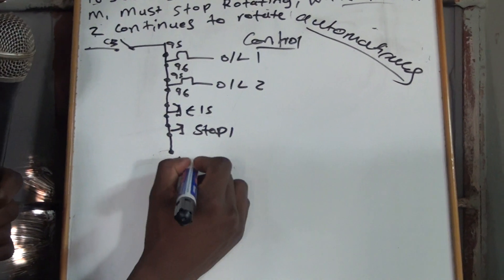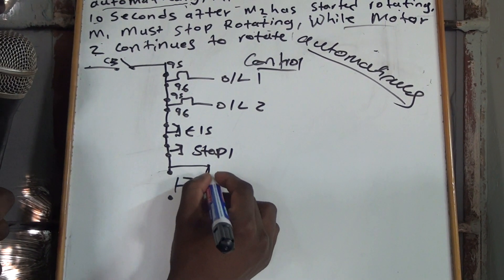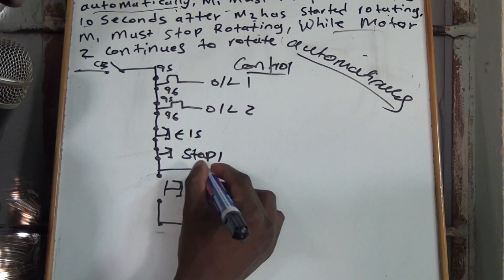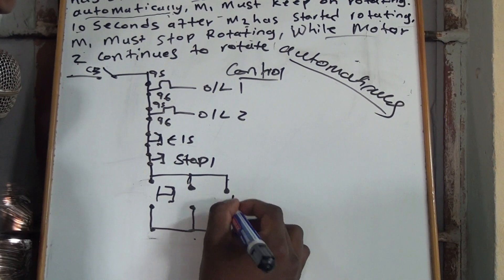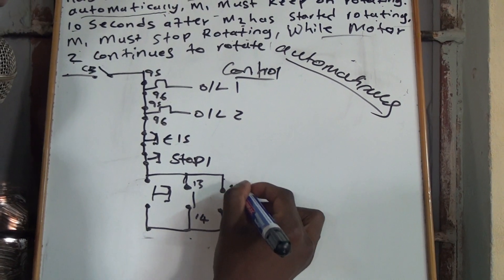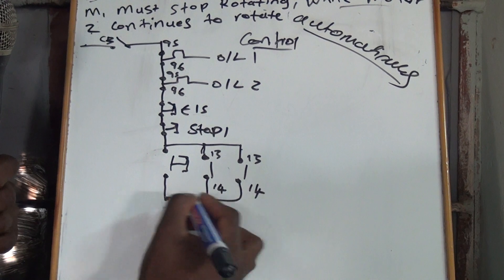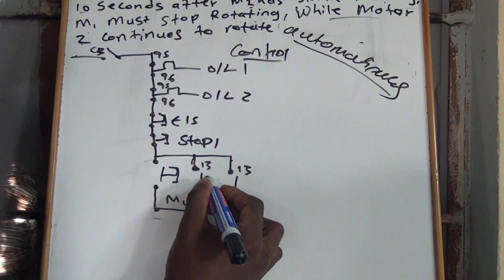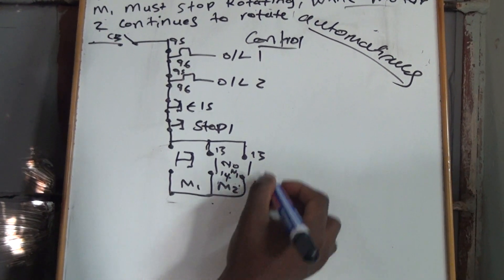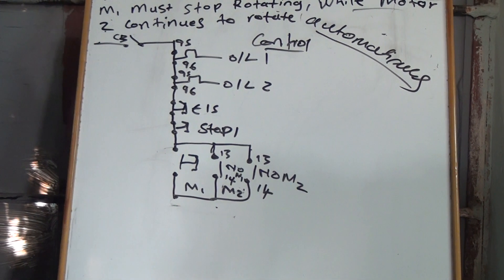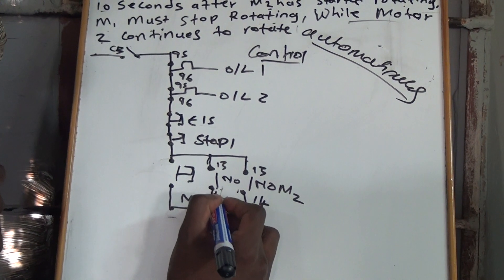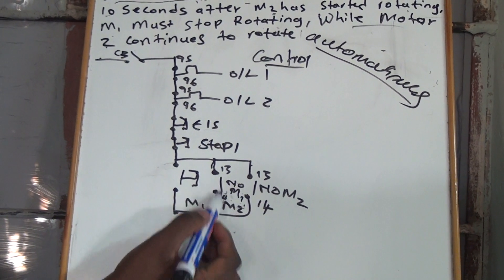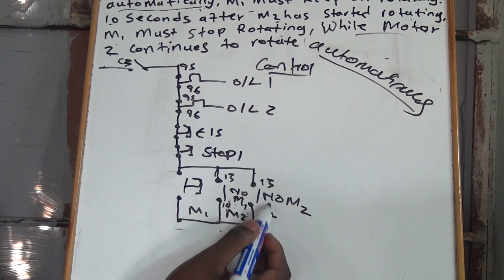We are going to have one start button. But we are going to have both retainers for Contactor 1 and Contactor 2 on the same start button. This is the retainer for Contactor 1 and for Contactor 2. This side is for Motor 1 and this side is for Motor 2 — a normally open for M1 and a normally open for M2. So you will see terminals 13 and 14 for Motor 1. This retainer is a normally open for Motor 1 and this retainer is a normally open for Motor 2.